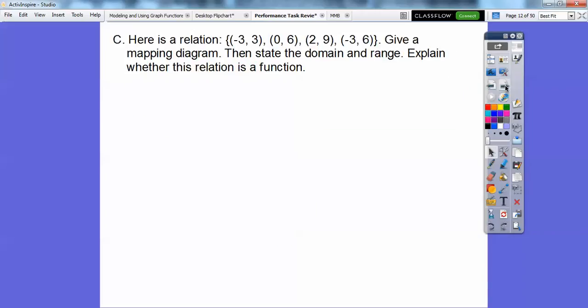All right, so here's a relation. A relation, remember, is just a set of ordered pairs. And then we're going to give a mapping diagram. Well, I'll show you what that is. I did that, and I think it was in lesson 3.1 or 3.2. And then we're going to state the domain and range and explain whether it's a function or not. Okay, so here's the mapping diagram. So this negative 3 went to 3, so I'm going to put an arrow to that. 0 went to 6, so an arrow from 0 to 6. 2 to 9, and then here's negative 3 again.